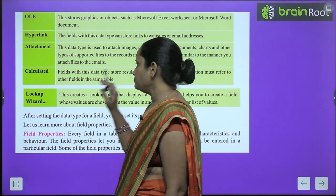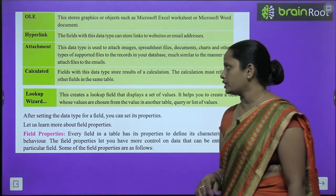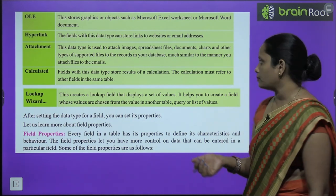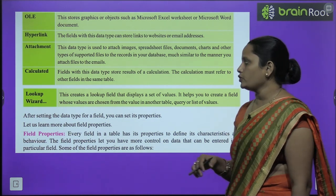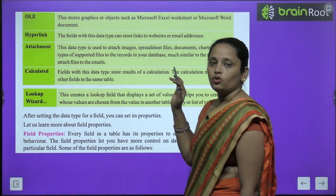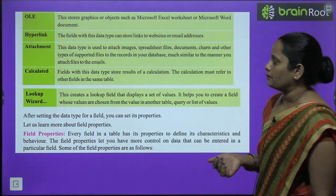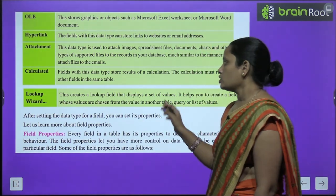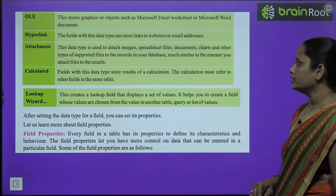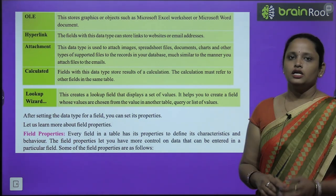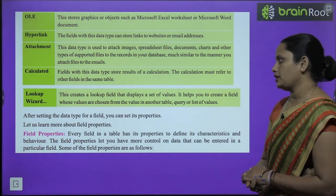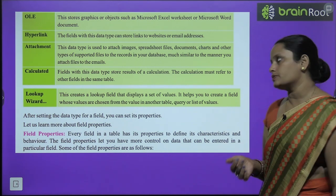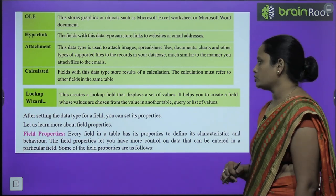Then comes Calculated — this field data type stores the result of a calculation. The calculation must refer to other fields in the same table. Next is Lookup Wizard, which creates a lookup field that displays a set of values. It helps you create a field whose values are chosen from the values in another table — such as a query, table, or list.